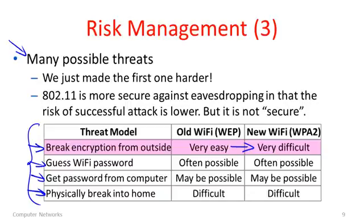The point of this exercise is that there are many possible threats which would lead to the same outcome of people being able to read your messages. So if we want to understand if a system is secure, we really need to consider the range of threats, because the weakest one will be the issue. 802.11 is not secure in any absolute sense — rather, it's more secure with WPA2 than WEP. Physical access matters as much as the security protocols sometimes.